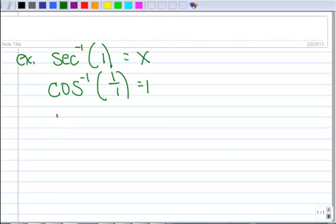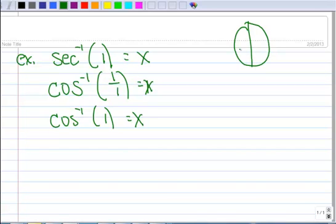So, let's apply the formula, which means I can turn this into an inverse cosine of 1 over 1. And, of course, 1 over 1 is 1, so we can simplify that. So, you just look at your circle. It's cosine, restricted domains, quadrant 1 and 2. And, where is the cosine 1? And, so that's at 0. So, the inverse secant of 1 is 0. Let's do another example.